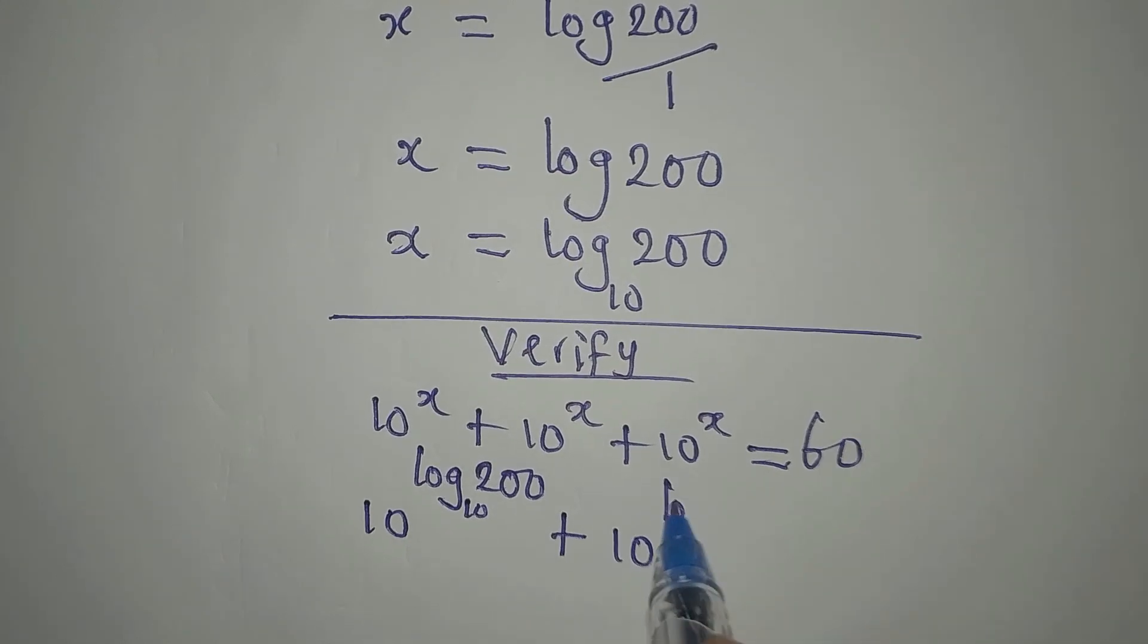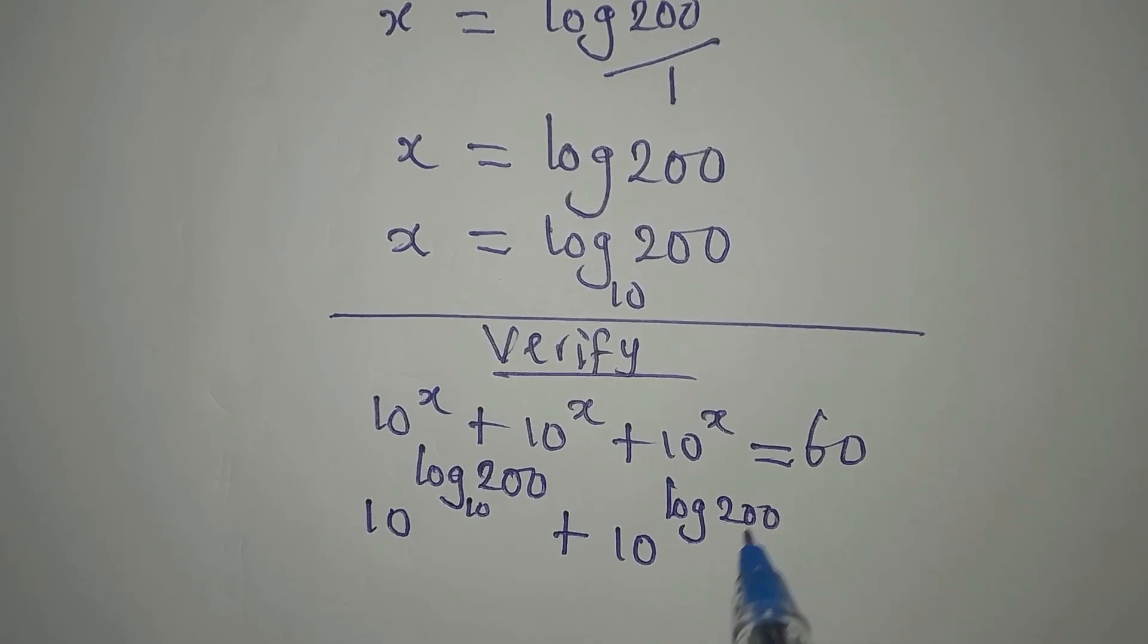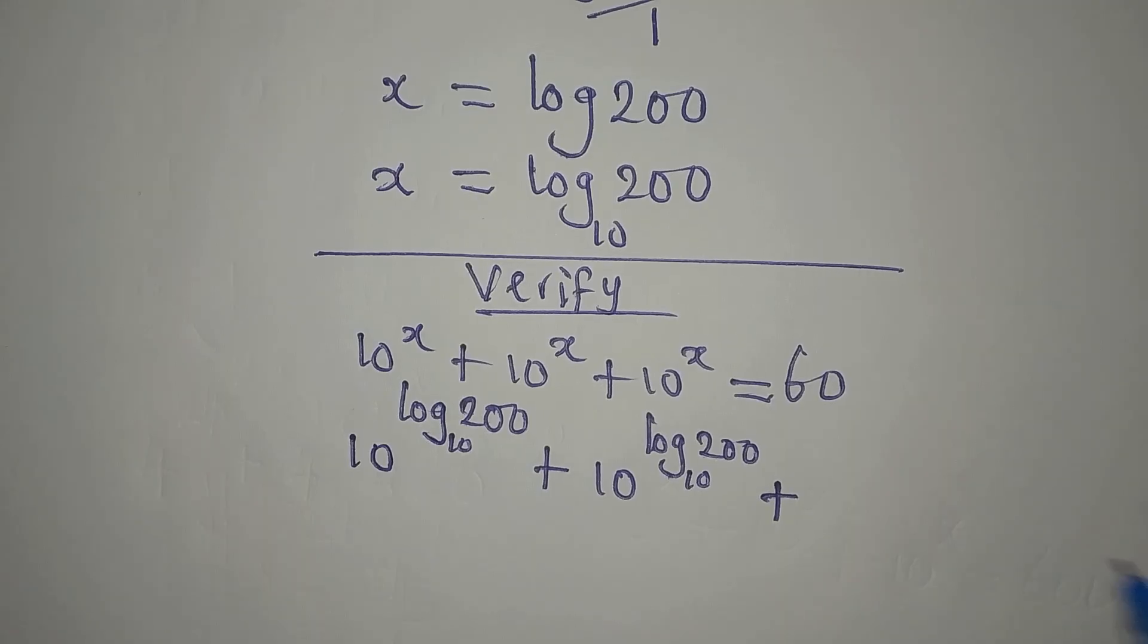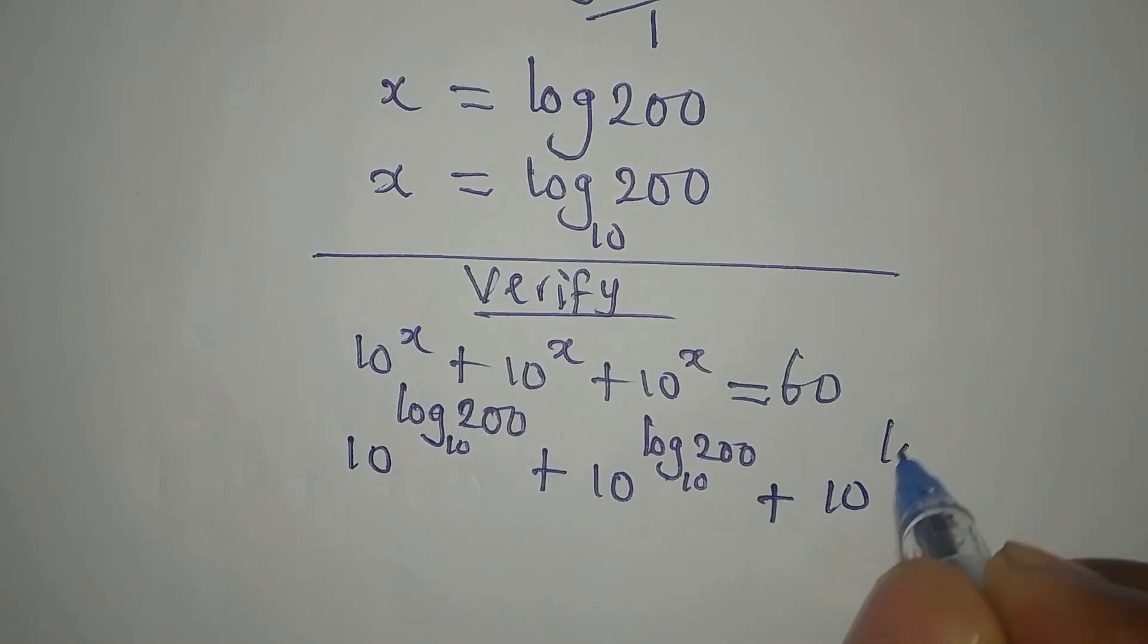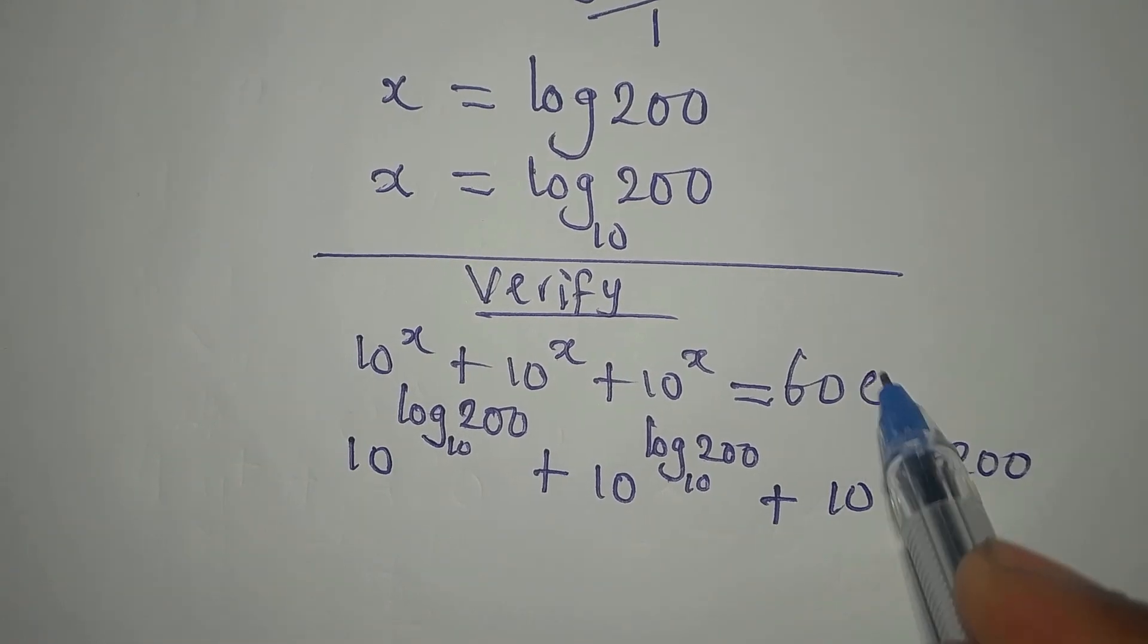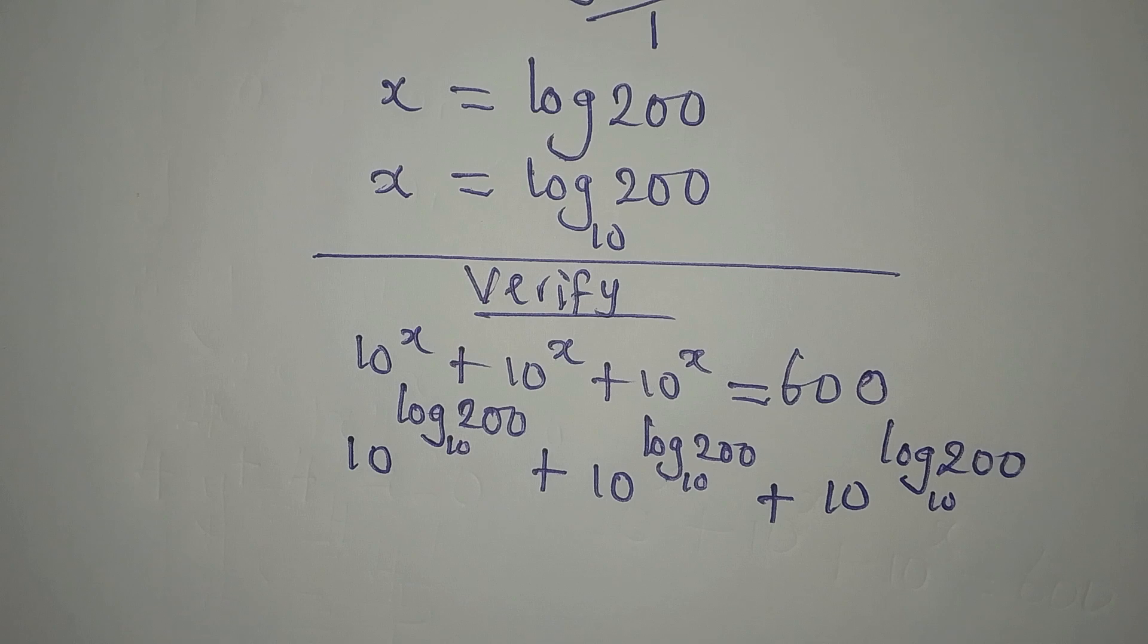Now we are going to have 10 to the power of log 200, and I told you log 200 is the same as log 200 to base 10, then plus 10 to the power of log 200 to base 10, plus another 10 to the power of log 200 to base 10. This is supposed to be 600.